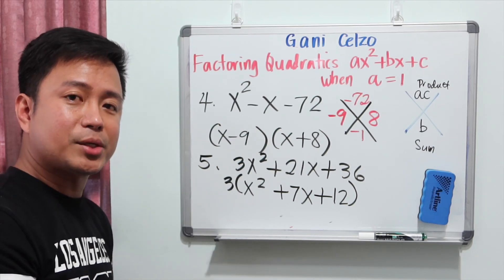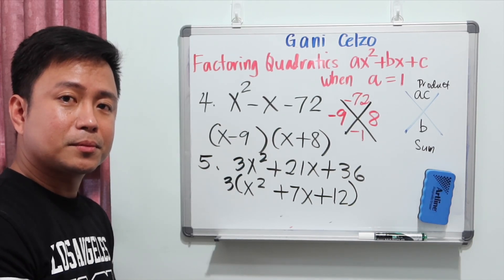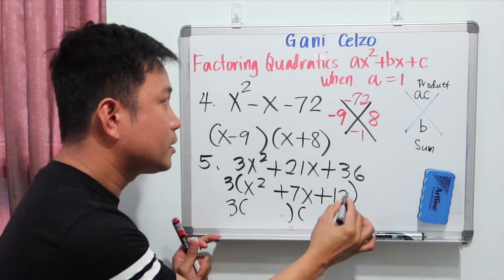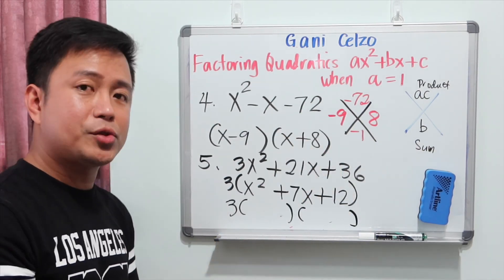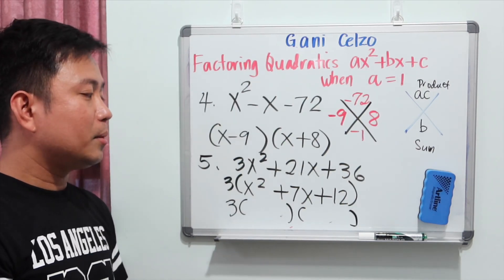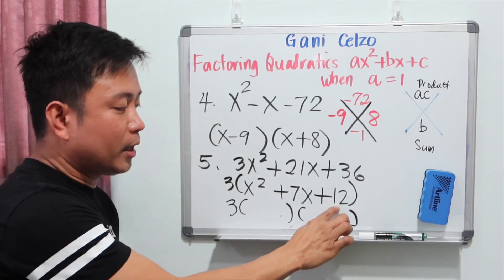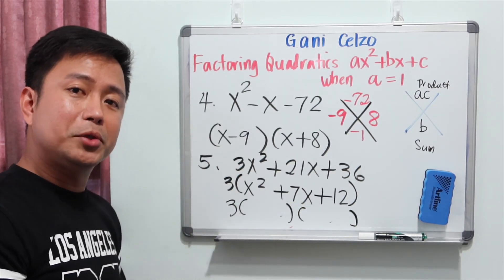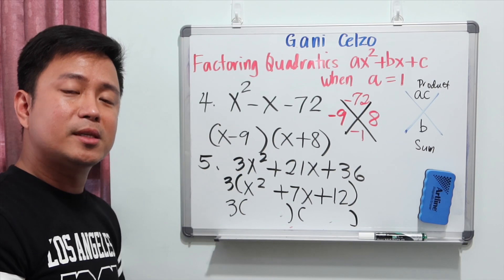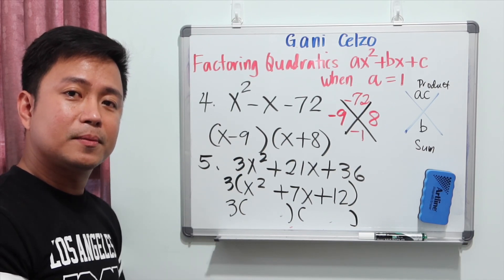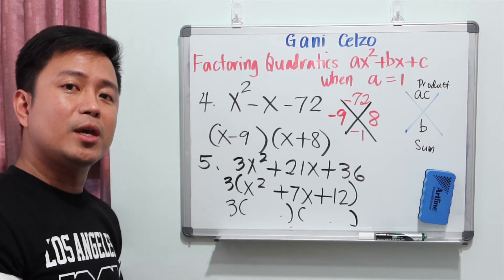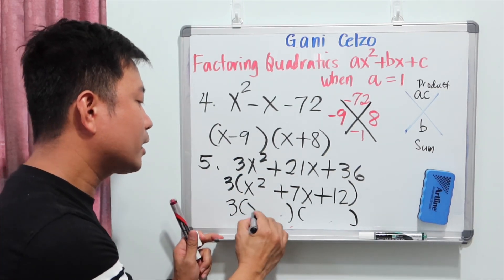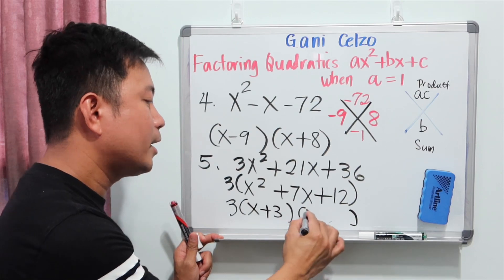Keep the 3 out front and use the same procedure as before. We need a product of 12 and a sum of 7 — two numbers that multiply to 12 and add up to 7. Those numbers are 3 and 4, so the fully factored answer is 3 times x plus 3 times x plus 4.